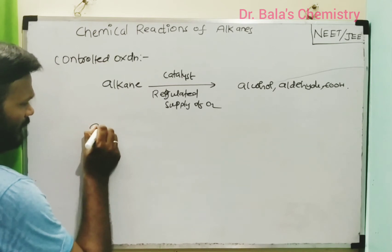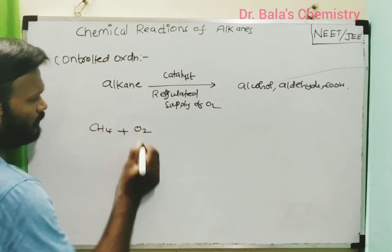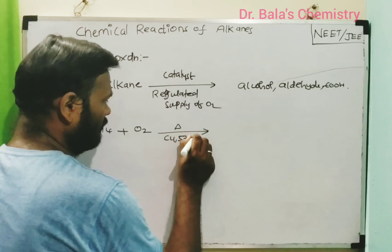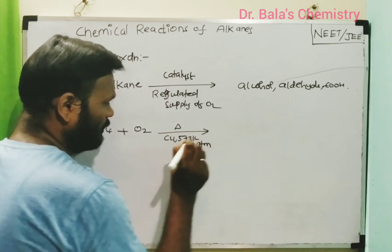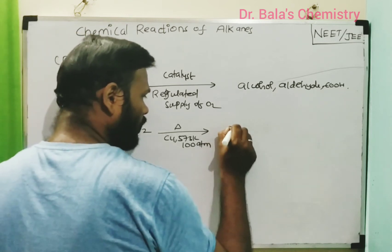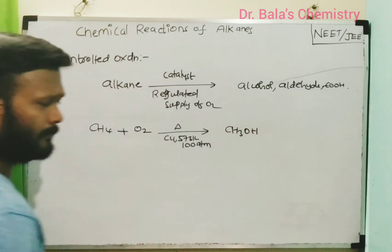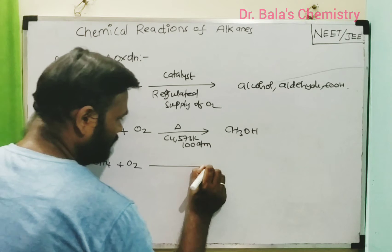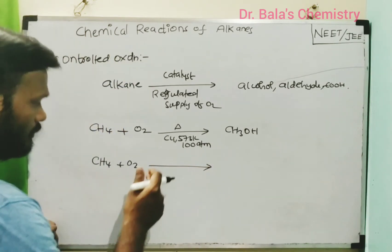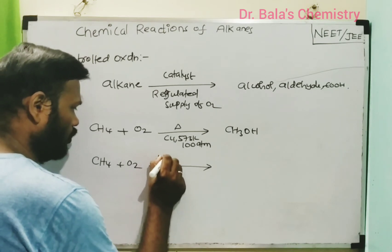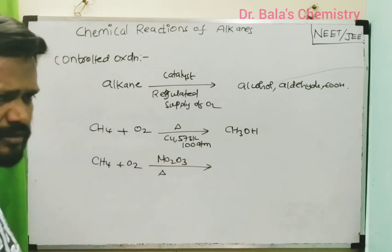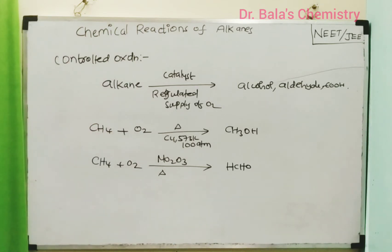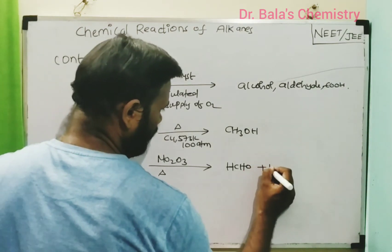For example, take CH4. With a regulated supply of oxygen, using copper catalyst at 573 Kelvin temperature under atmospheric pressure, you will get CH3OH — alcohol formation. Alternatively, using Mo2O3 as catalyst with controlled oxygen supply, you get HCHO (formaldehyde) along with a water molecule.